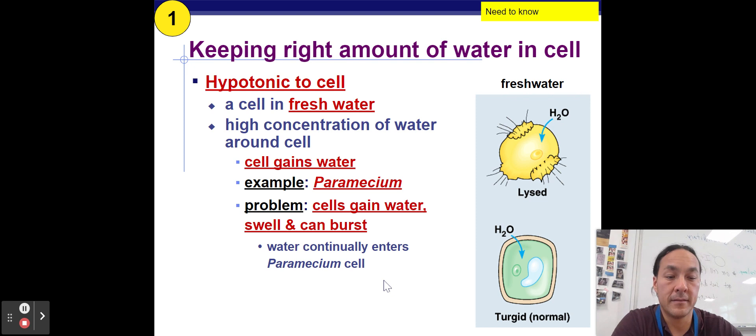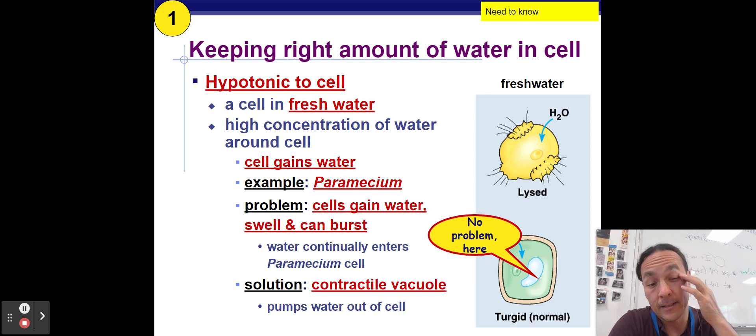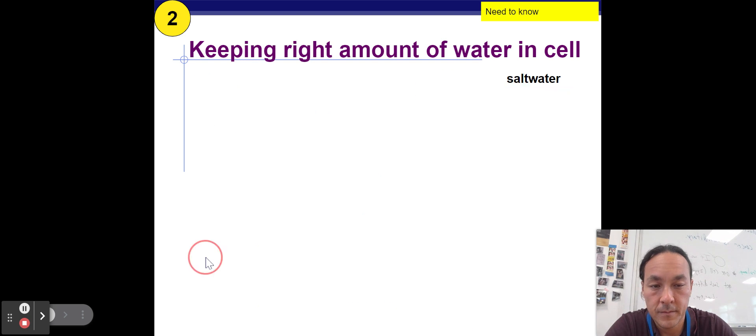It will need to pump it out. And it pumps it out with what's called a contractile vacuole. For plant cells, it's not an issue. Because plant cells have a cell wall, if they're in a hypotonic environment, the cell wall is able to push back against the water rushing in. And so that's what makes plants turgid or what makes them look fresh and plump.